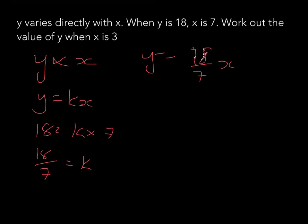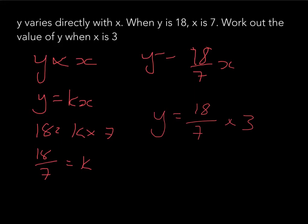Now we substitute x equals 3 into our equation: y equals 18 over 7 times 3. So that's 3 times 18 — 3 tens are 30, 3 eights are 24, giving 54 over 7. Does that simplify? No. So the answer is y equals 54 over 7.